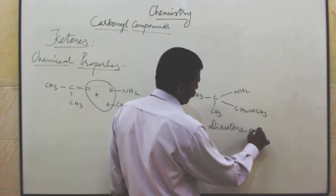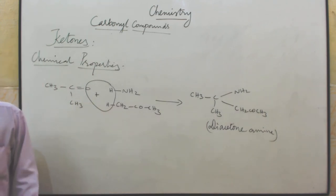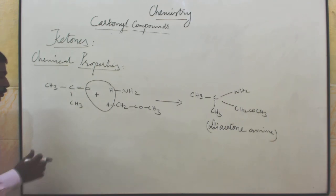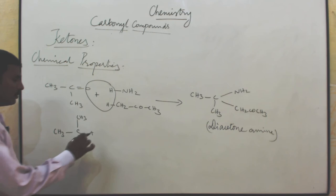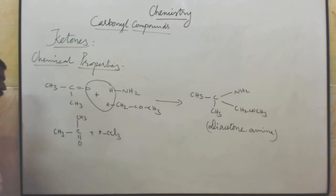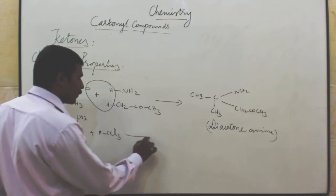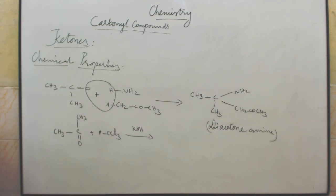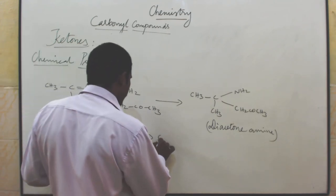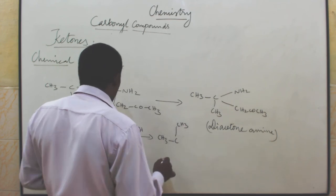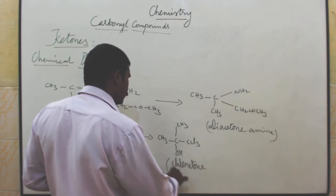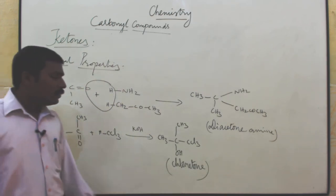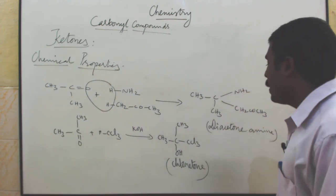Acetone reacts with chloroform. Acetone, CH3COCH3, reacts with chloroform CHCl3. The reaction takes place in the presence of potassium hydroxide (a base). The product name is chloretone: CH3C(CH3)(OH)-CHCl3. So ketone reacts with chloroform in the presence of alkali like potassium hydroxide, and you will get chloretone as the product.